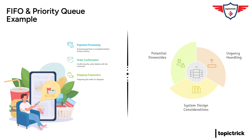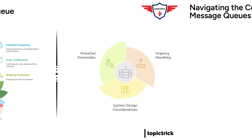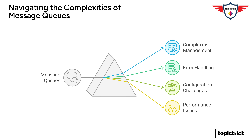Message queues are pretty awesome, but they're not a silver bullet for every problem. One thing to keep in mind is that introducing message queues can add complexity to a system — you need to manage the queues themselves, handle potential errors, and make sure everything is configured correctly. It's a trade-off: you get all these benefits, but you also have to be prepared to handle the added complexity. And while message queues promote asynchronous communication, they don't inherently guarantee speed. If a consumer is slow to process messages, it can create bottlenecks and slow down the whole system — like a traffic jam on a conveyor belt.